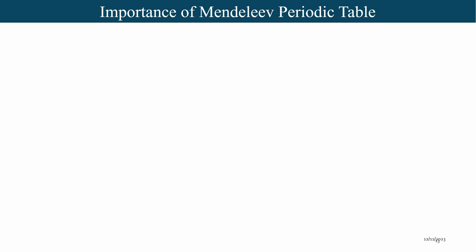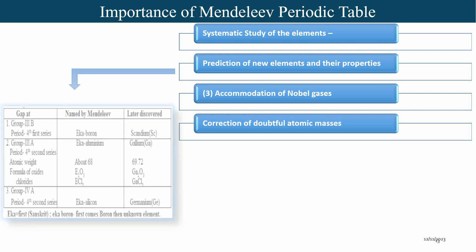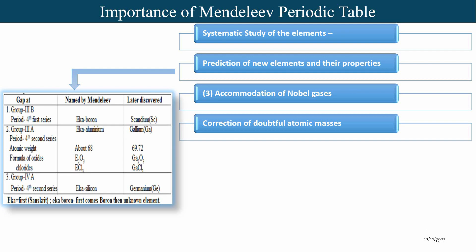Mendeleev's periodic table was greatly appreciated by the scientific community because of some important outcomes. First, Mendeleev arranged elements very systematically and predicted new elements along with their properties. For example, in Group IIIB and Period 4, he left a space for an element and named it eka-boron.